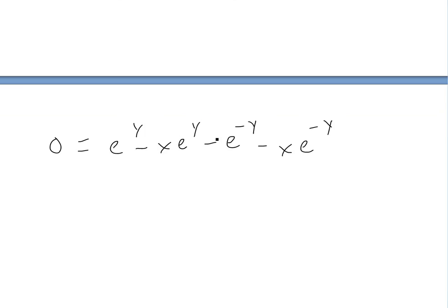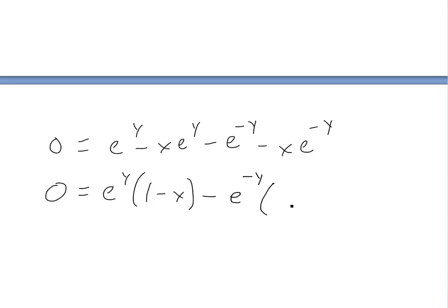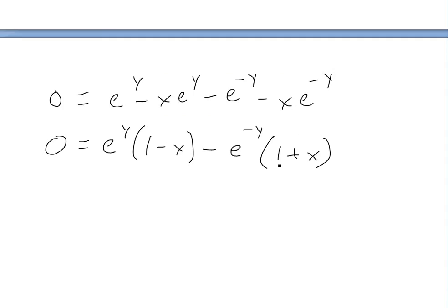Now we factor out like terms: e to the y times (1 minus x), and then taking the negative out, we get minus e to the negative y times (1 plus x). So we're left with zero equals e to the y times (1 minus x) minus e to the negative y times (1 plus x). A clever step from the calculus book is to multiply both sides by e to the y.